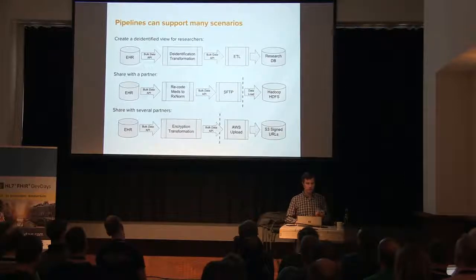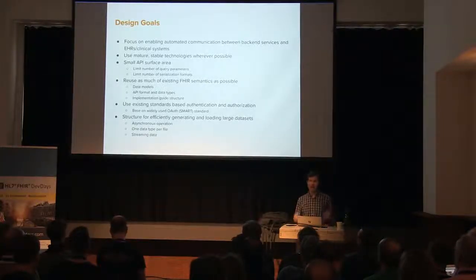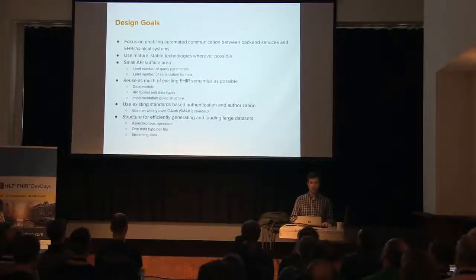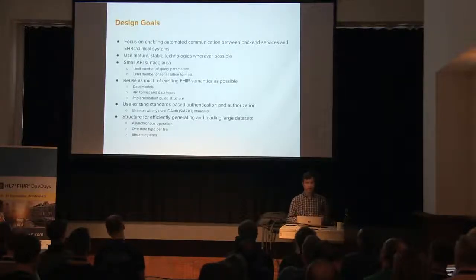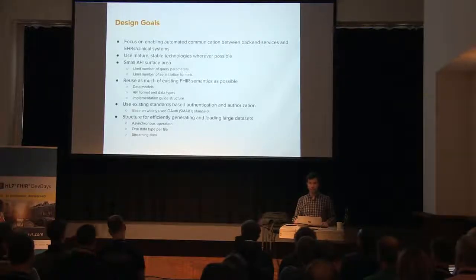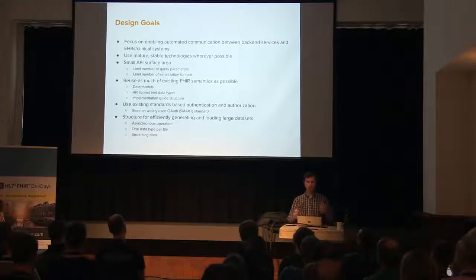That's the overall architecture we're trying to approach — the narrowest piece possible to achieve these design goals. The focus is on automating communication with what we call a back-end service: a computer program running on a server that needs to exchange FHIR resources with a clinical data source. We lean on well-understood technologies, keep the smallest API surface area we can, reuse as much of the FHIR API and authorization approach as possible, and create a system efficient enough to exchange data about whole populations at once. We're starting from the experience of sharing flat CSV files, using that as a starting point for exporting FHIR data into files containing large numbers of FHIR resources.